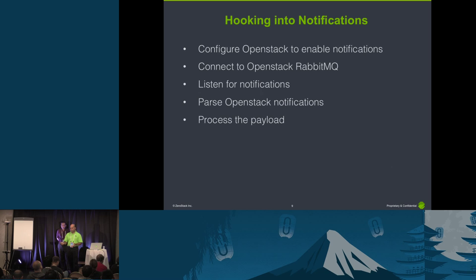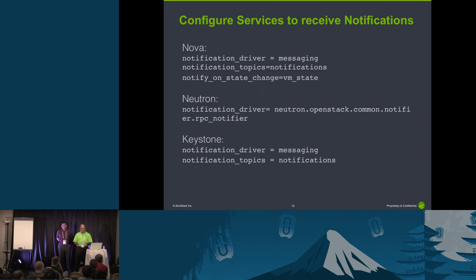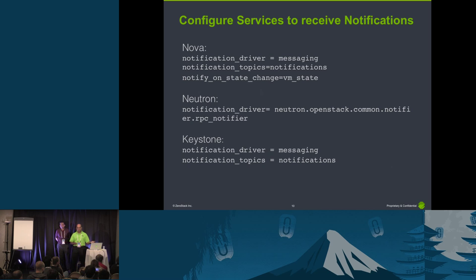If you search on the internet for 'enable notifications OpenStack,' you'll find 10 different ways to enable notifications. We'll show you an example of the configuration that works for us in Kilo. Then: how do you connect to RabbitMQ, how do you listen for these notifications, what type of data do you get, and how do you parse and process it? This is a configuration for Nova, Neutron, and Keystone. We'll upload a readme.md into our open source library with the rest of the configuration. There are various different ways to enable this in different versions. This is the one that works in Kilo.